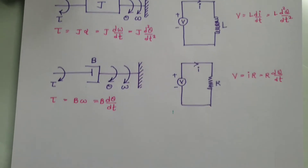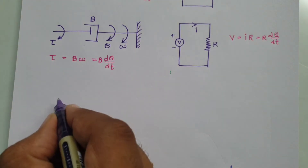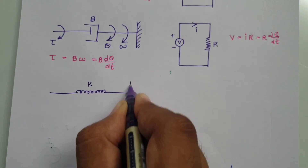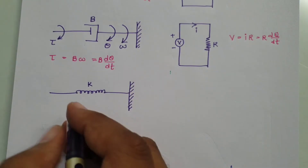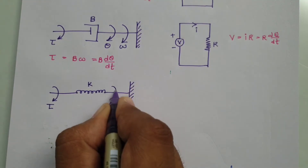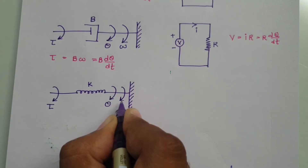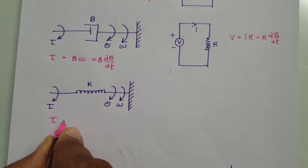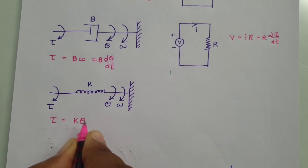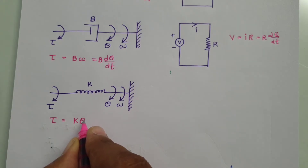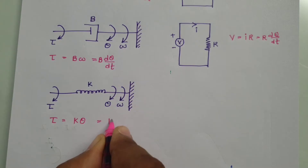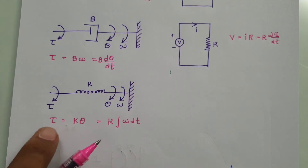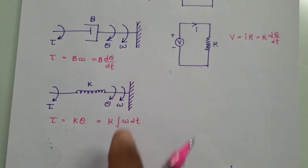The third case for the mechanical rotational system is a spring with spring constant K connected to a support. If we provide torque τ, the angular displacement is θ and angular velocity is ω. The restoring torque is K times θ. If we want to calculate θ in terms of angular velocity, that will be the integration of angular velocity with respect to time. This is how torque is identified based on angular displacement and angular velocity.